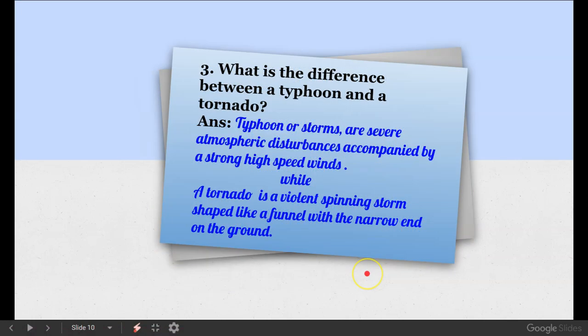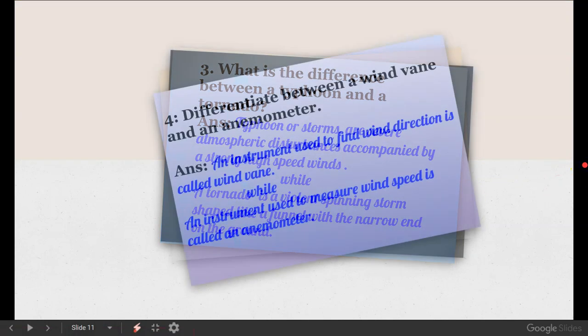Question number 3. What is the difference between a typhoon and a tornado? Typhoons or storms are severe atmospheric disturbances accompanied by strong high-speed winds. We have learned about storms, cyclones, etc. They cause winds. A tornado is a violent spinning storm shaped like a funnel with a narrow end on the ground. Tornado seems like a boundary. So this means it is a tornado. It is a tornado.